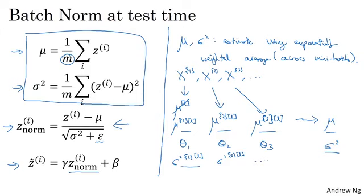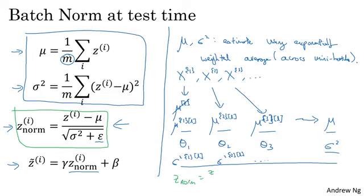Then finally, at test time, what you do is, in place of this equation, you would just compute z_norm using whatever value z you have and using your exponentially weighted average of the mu and sigma squared, whatever was the latest value you have to do the scaling here.